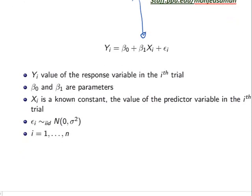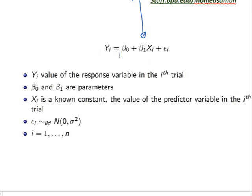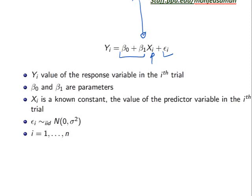Our model is written as yᵢ = β₀ + β₁xᵢ + εᵢ, where yᵢ is the response variable, β₀ and β₁ are the unknown parameters — β₀ is the y-intercept and β₁ is the slope — and xᵢ is the predictor variable or explanatory variable. The last term εᵢ represents the error. We assume that εᵢ are independent and identically distributed, and that εᵢ is normal with mean 0 and variance σ².